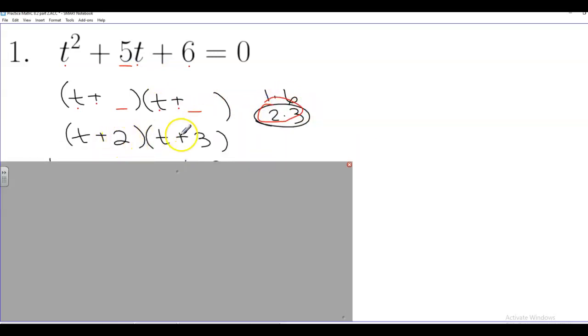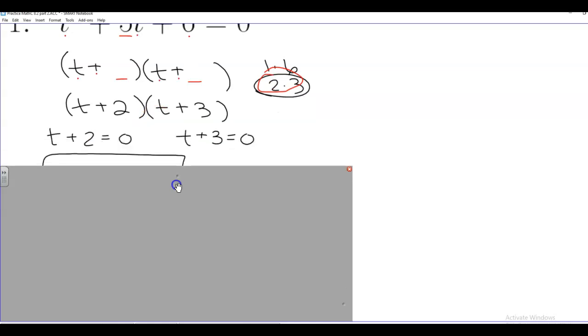So t plus 2, t plus 3. 2 times 3 is positive 6. Positive 2 added to positive 3 is positive 5, so that checks. So we set these guys each equal to 0, so t plus 2 equals 0, t plus 3 equals 0.